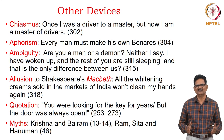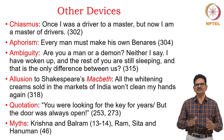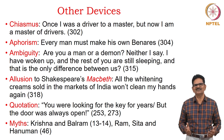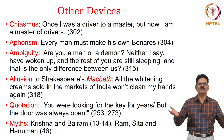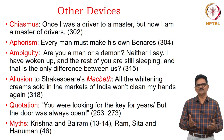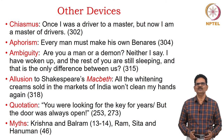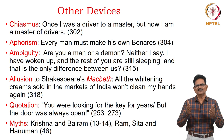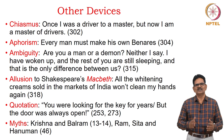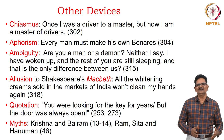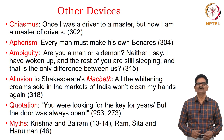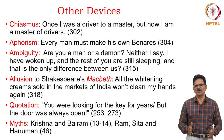We have some allusions to Shakespeare's play Macbeth. After killing Ashok, Balram says: 'All the whitening creams sold in the markets of India won't clean my hands again' — like Lady Macbeth. He has to live with the guilt of the murder. We have a quotation repeated two times, part of Persian poetry: 'You were looking for the key for years, but the door was always open' — the simplest wisdom in the novel. There are also mythical references to Krishna and Balram — Krishna is a teacher and Balram is a student. Though Krishna is younger and Balram is the elder among the divine beings in myth, we also have references to Ram, Sita, and Hanuman in the novel.